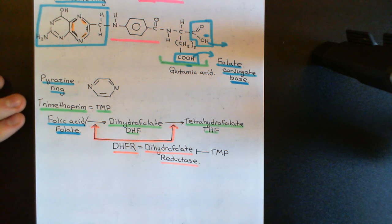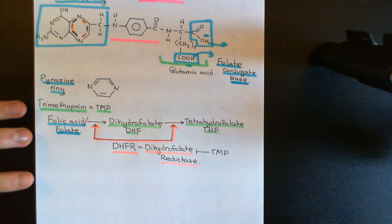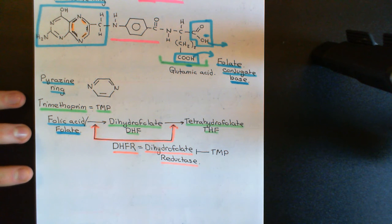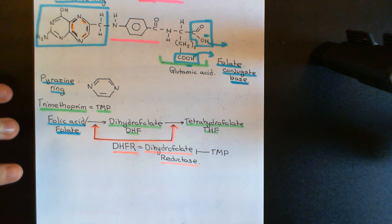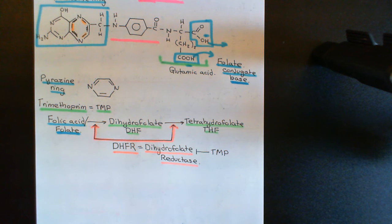You therefore run out of tetrahydrofolate molecules. The enzymes which create the nucleotides of DNA and RNA will therefore stop working, giving the exact same effect as the sulfonamides — a bacteriostatic effect. So trimethoprim is also referred to as a folate antagonist because it antagonizes the folic acid pathway and stops bacterial cells from being able to divide by damaging their handling of folic acid.